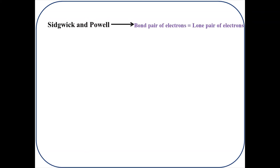In 1940, Sidgwick and Powell showed that for molecules as well as ions that contain only single bonds, the approximate shape can be predicted from the number of electron pairs in the valence shell of the central atom. The outer shell contains one or more bond pairs of electrons, but it may also contain unshared or lone pairs of electrons.